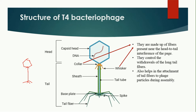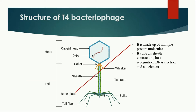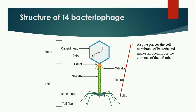The base plate is made up of multiple proteins and controls several functions: sheath contraction, host recognition — meaning which bacteria the phage is going to infect — DNA ejection (the movement of DNA from the head to the bacteria), and attachment to the host.